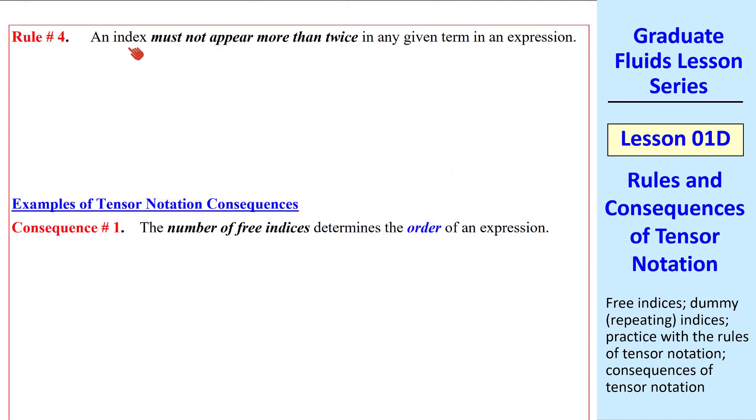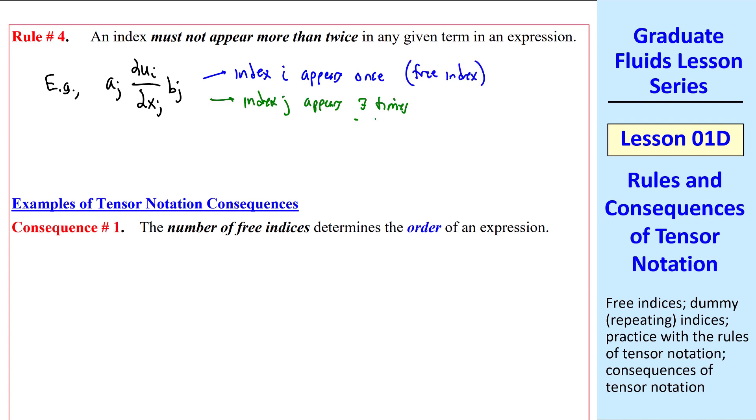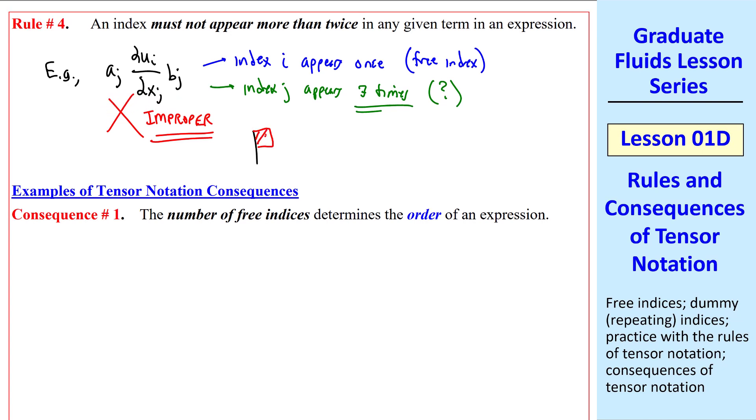Rule number 4 is that an index must not appear more than twice in any given term in an expression. Suppose, for example, you had this expression. Index i appears once, so it's a free index. But index j appears three times. It's not a free index or a dummy index. So this expression is improper. In fact, it's kind of meaningless, because we don't even know what to do with these j's. If you're working through algebra and you get something like this, it should be a red flag, indicating that there's something wrong. You must have done some improper algebra.